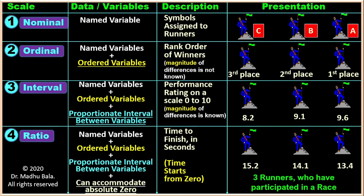Ratio scale possesses the characteristics of nominal, ordinal, interval, and ratio scale, and there is a true zero. In interval, ordinal, and nominal scale there is no true zero. Nominal scale is called named variable because we assign names, labels, or tags to objects to identify or classify them. In ordinal scale, ordering or ranking of the variables is done. In interval and ratio scale we can measure the magnitude or differences among the variables. The additional feature of ratio scale, beyond the earlier three scales, is that it can accommodate absolute zero.